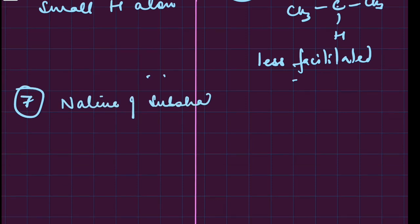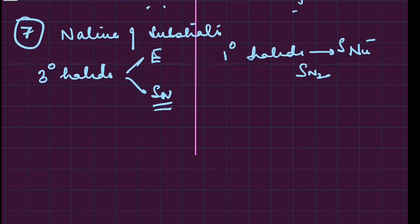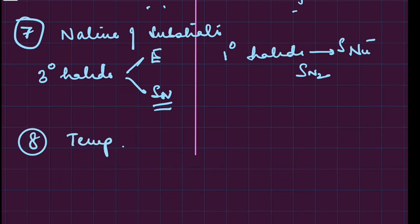Nature of substrate: suppose you have a one degree halide, it will undergo nucleophilic substitution. Suppose you have a three degree halide, both possibilities are there - it can undergo elimination or substitution. If the attacking reagent is a strong base, elimination will happen; if it's a weak base, substitution can happen. Temperature usually governs - high temperature means more bonds break, which always favors elimination.